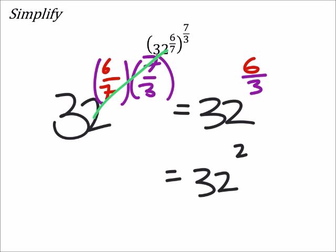So 32 squared, in my calculator, I get 1024.